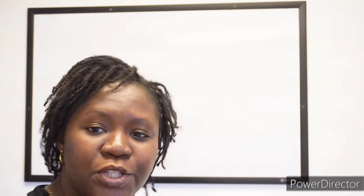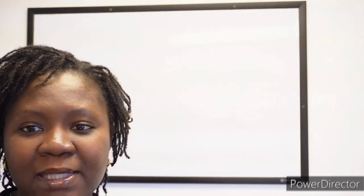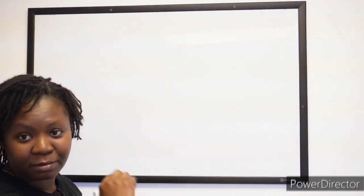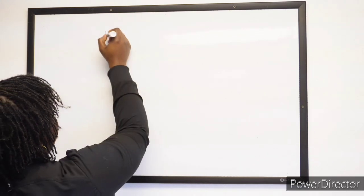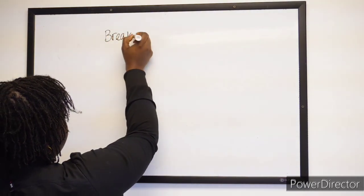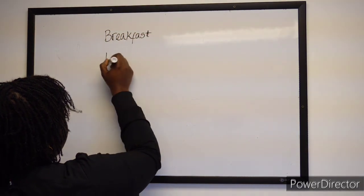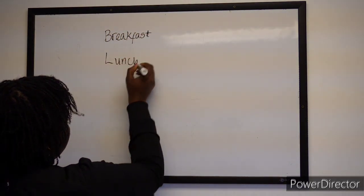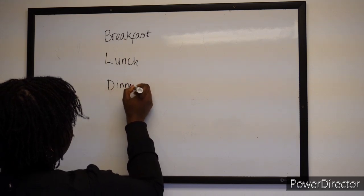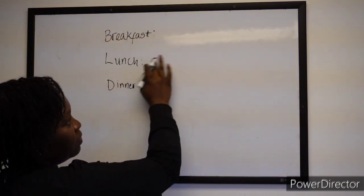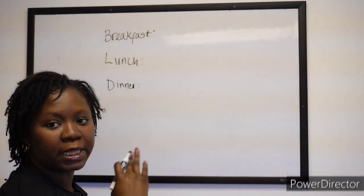So what I like to do is make a list of things I want to make — maybe hamburger, pizza, spaghetti, chicken and rice, pork chops. I make a list of all those, and then I get a board like this, or paper and pen, and write down breakfast, lunch, and dinner. I make a list of different types of foods that can go for breakfast, lunch, and dinner.